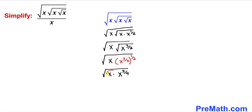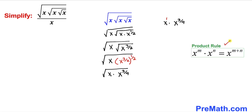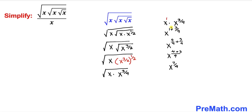Now let's focus on the inside of the radical. We need to multiply x times x to the power 3 over 4. Writing x as x to the power 1 and applying the product rule gives x to the power 1 plus 3 over 4. Since 1 can be written as 4 over 4, this simplifies to x to the power 7 over 4. So we replace the whole expression inside the radical with x to the power 7 over 4.